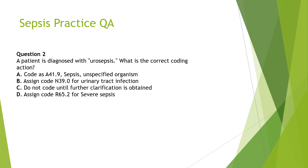Question 2: A patient is diagnosed with urosepsis — what is the correct coding action? The options are: code as sepsis; assign as urinary tract infection; do not code until further clarification; or assign R65.2 for severe sepsis. As previously discussed, urosepsis is a non-specific term with no ICD code, and we should not consider it as sepsis. Option C is correct: do not code until further clarification is obtained from the provider.